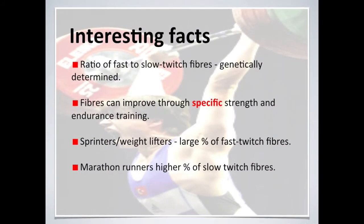Some interesting facts relating to muscle fibres. The ratio of fast-to-slow-twitch fibres is genetically determined and cannot be changed. However, fibres can improve through specific strength and endurance training, meaning the fibres we have can experience hypertrophy and function better. Sprinters and weightlifters have a larger proportion of fast-twitch fibres, and marathon runners have a higher percentage of slow-twitch fibres.